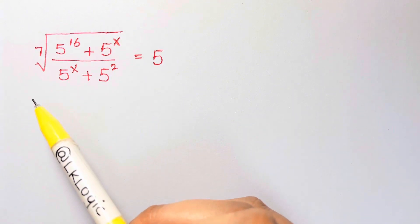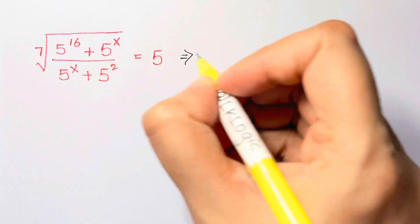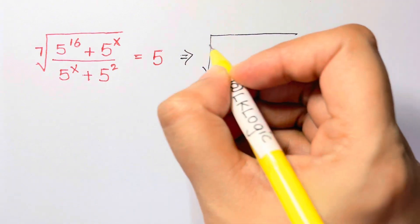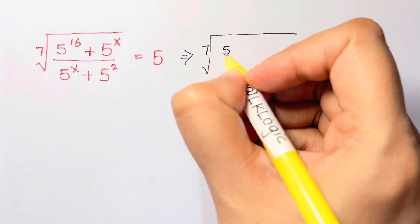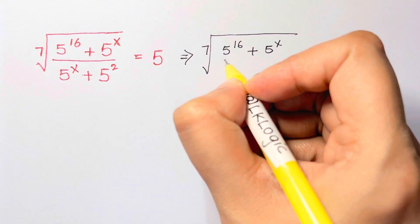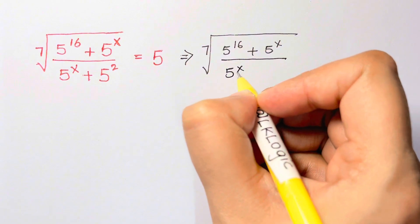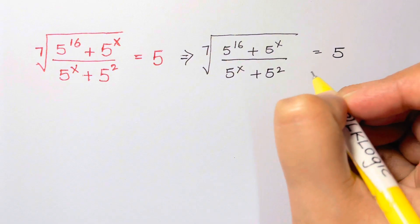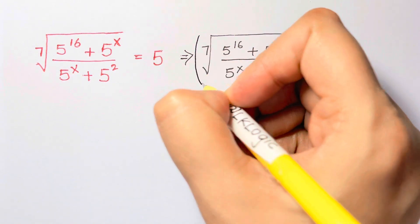So what is the first step to solve this? What we are going to do is write the radicand — that is the 7th root — and under that we have 5 to the 16 plus 5 to the x, over 5 to the x plus 5 squared, equal to 5.